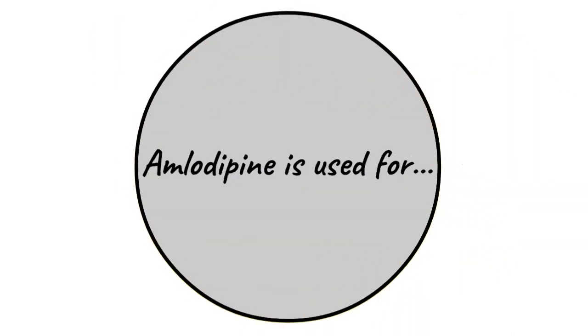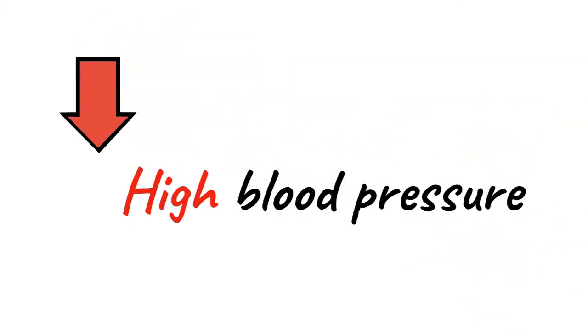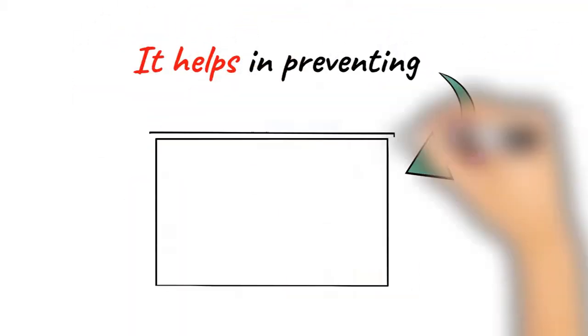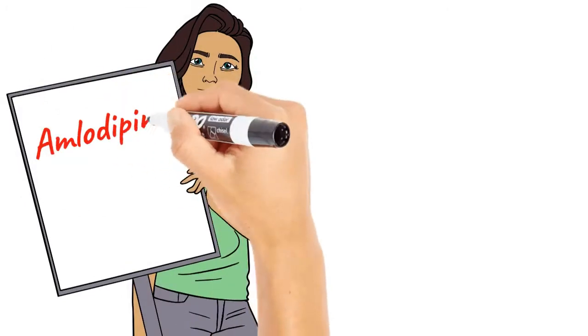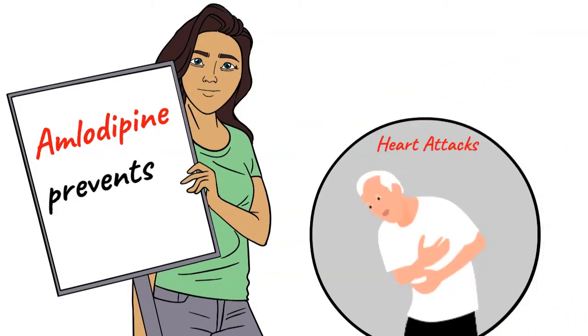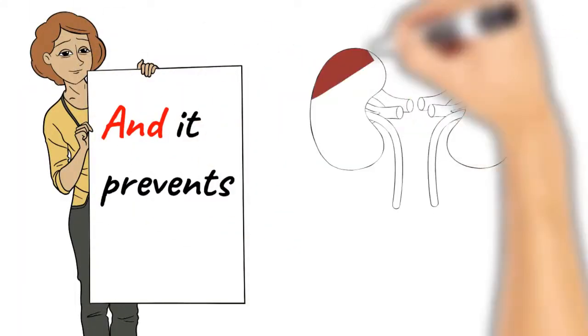Amlodipine is used for lowering high blood pressure. It helps in preventing strokes, heart attacks, and kidney problems.